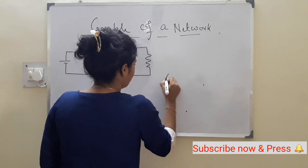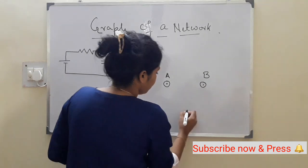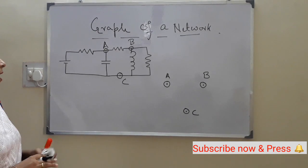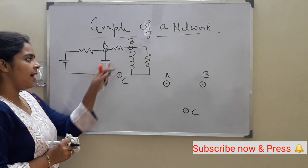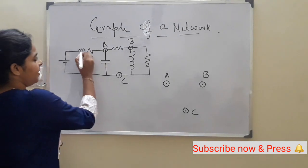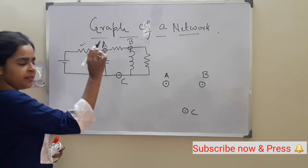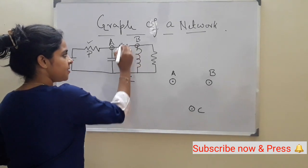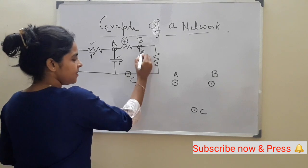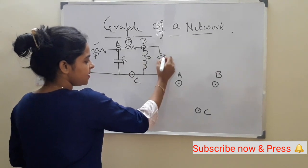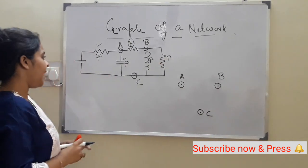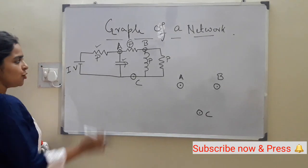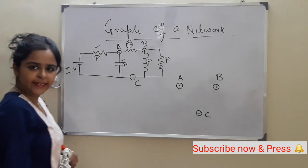That is node A, node B, and node C. Now we have to see how many types of elements are in the network. This is a resistance — that is a passive element. This is a capacitance, also a passive element. This is passive, this is passive, this is resistance, this is a passive element. This is an inductor — also a passive element. This is a resistor — also a passive element. And this is an ideal voltage source.